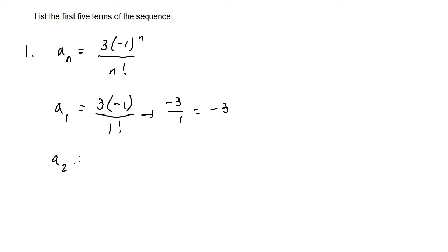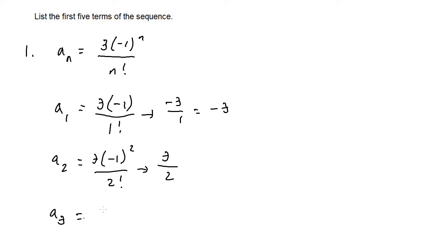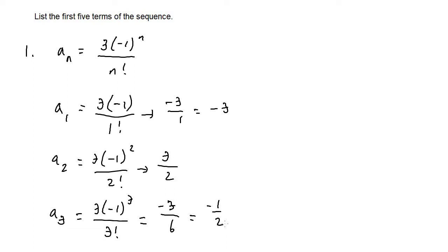For a_sub_2, we plug in 2 for n: 3 times negative one squared over 2 factorial. Negative one squared is 1, so we have 3 over 2, which is the second term. For a_sub_3, we plug in 3: 3 times negative one cubed over 3 factorial. Negative one cubed is negative one, so we get negative 3 over 6, which simplifies to negative one half — the third term.